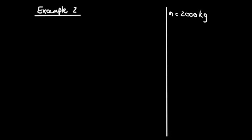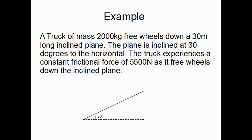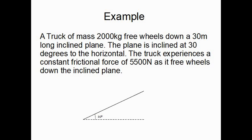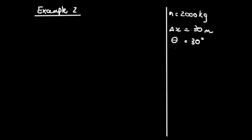They gave us the mass of the truck, which was 2,000 kilograms. They gave us the displacement, delta x, which was 30 meters. They also gave us theta, which was 30 degrees. And the truck experiences a constant frictional force of 5,500 newtons. Since it's freewheeling down, there's no applied force — we only have the frictional force of 5,500 newtons.